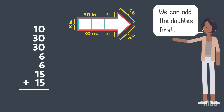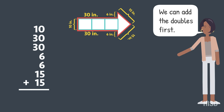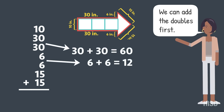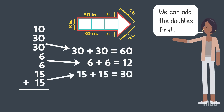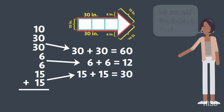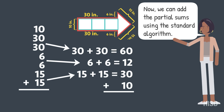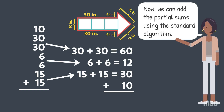We can add the doubles first. 30 plus 30 equals 60. 6 plus 6 equals 12. 15 plus 15 equals 30. Now we can add the partial sums using the standard algorithm.